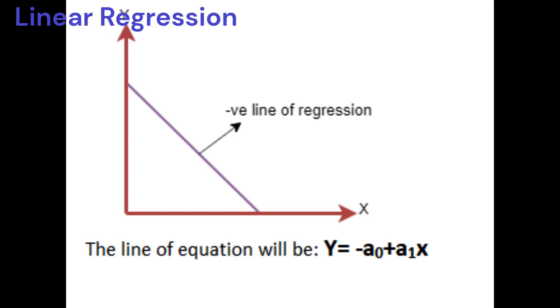The different values for weights or the coefficients of lines a0 and a1 give different lines of regression. So we need to calculate the best values for a0 and a1 to find the best fit line, and to calculate this we use cost function.